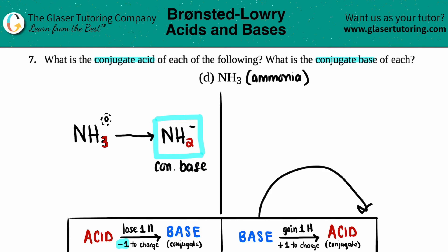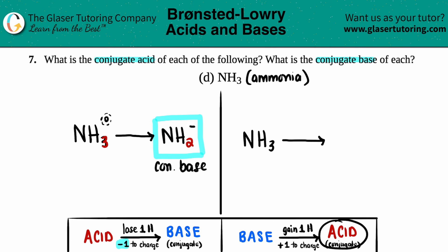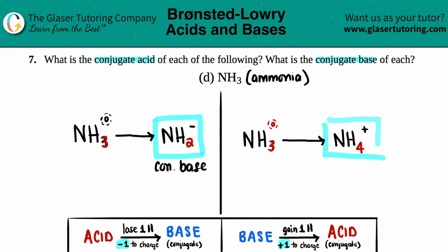Now let's find the conjugate acid by treating ammonia as a base. Generally speaking, ammonia will more often act as a base than an acid. Conjugate acids always have one more hydrogen, so we bump the hydrogen number up from three to four: NH4. For the charge, going from base to acid, you add one. We had a zero charge, so zero plus one gives us a positive one — a plus charge. That's your conjugate acid.